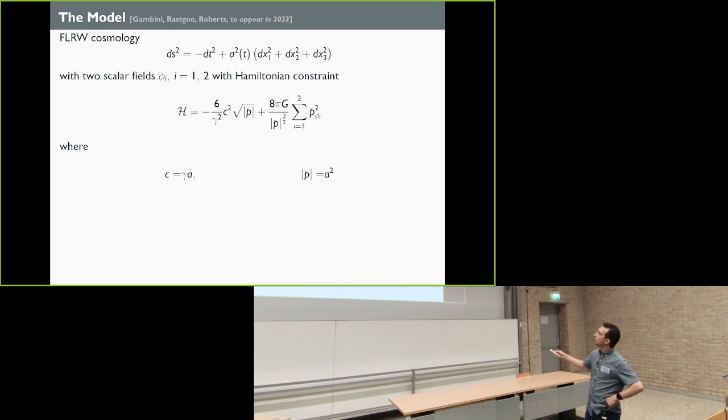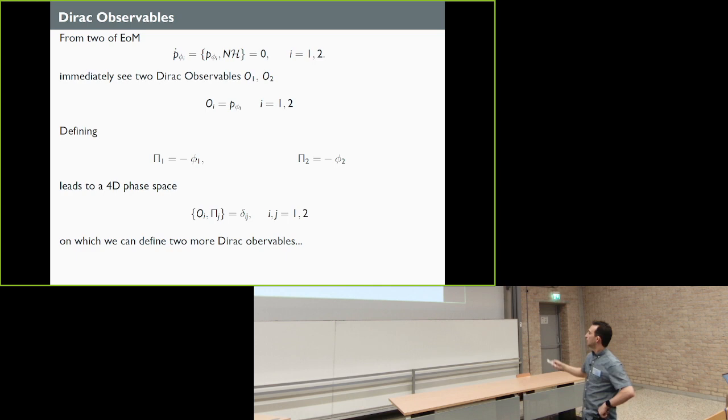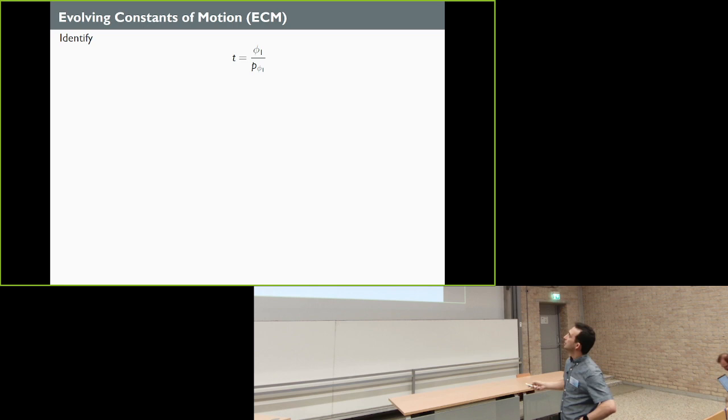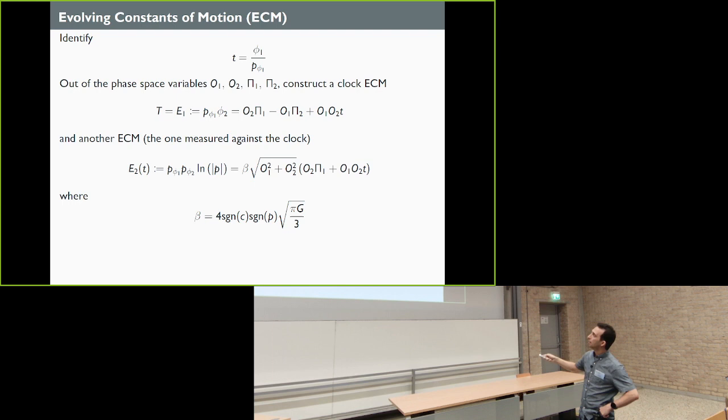I'm going to quickly go through our model. This is a cosmological model with two scalar fields. The Hamiltonian constraint, which is a constraint, becomes like that. These are the canonical variables in the gravitational sector related to the scale factor, and this is the momentum of the scalar field. So first step, you find the Dirac observables. Immediately, based on equations of motion, you see that P5 commutes with the Hamiltonian, which is the only first class constraint in the system. So P5-1 and P5-2 are Dirac observables. We can create a nice four-dimensional phase space based on these observables. And then we identify a combination of the phase space with that t. And then we go on and construct two evolving constants of motion. Both of these commute with the Hamiltonian, but they have t in them. That's why they're called evolving constants of motion.